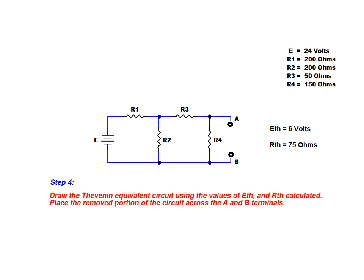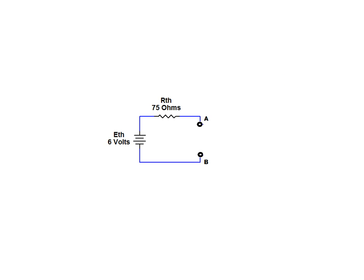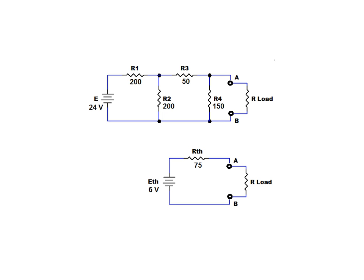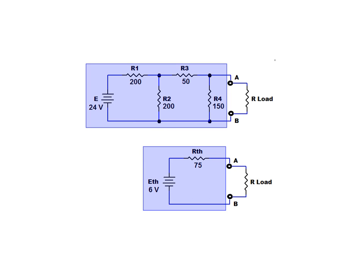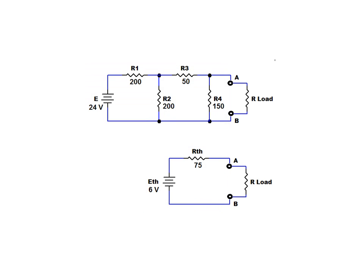Now that the values of ETH and RTH have been determined, we move on to the final step in the process, step 4. We redraw the circuit and use the calculated values for ETH and RTH to create the Thevenin-equivalent circuit for our original network. Finally, we return the portion of the circuit that was removed in step 1 at points A and B. The behavior of the original network and the Thevenin-equivalent circuit are identical with respect to points A and B. The Thevenin-equivalent circuit provides a simplified representation of the original network, which will greatly reduce the number of calculations required to determine how the original network responds to various load conditions.